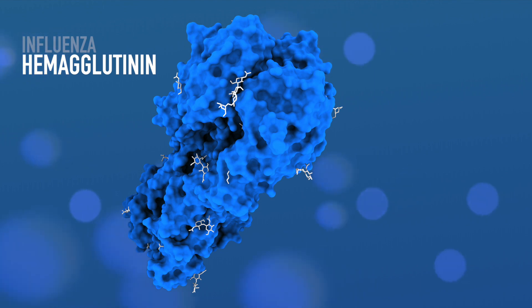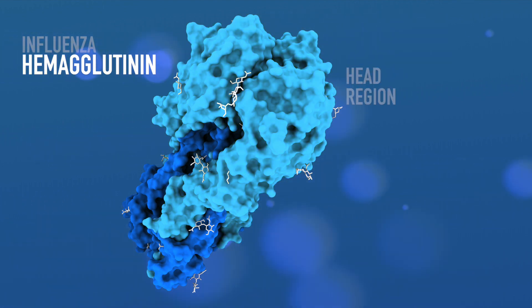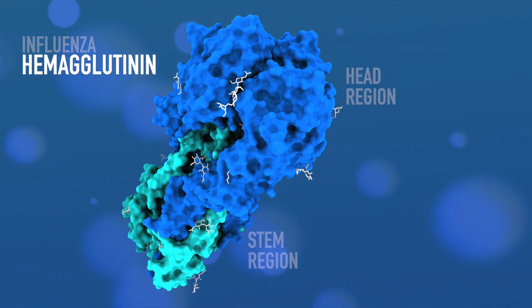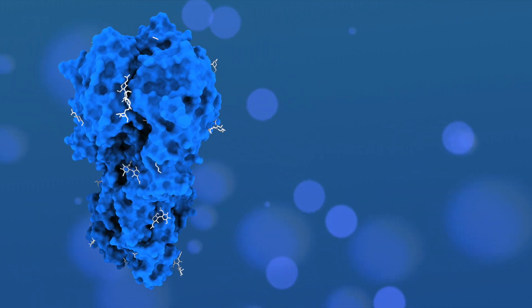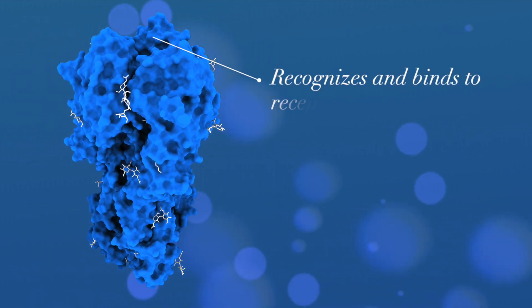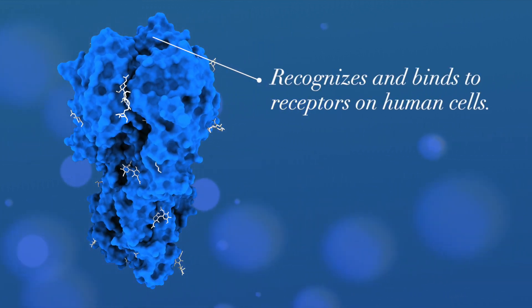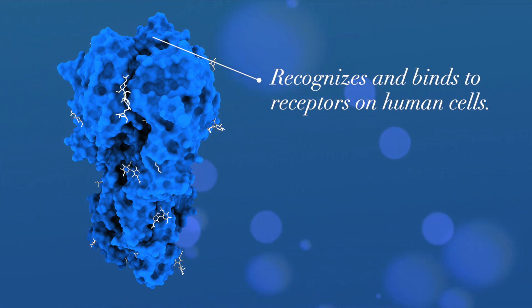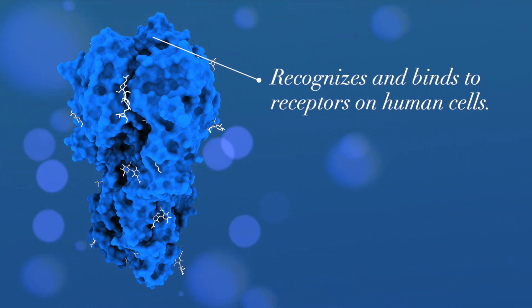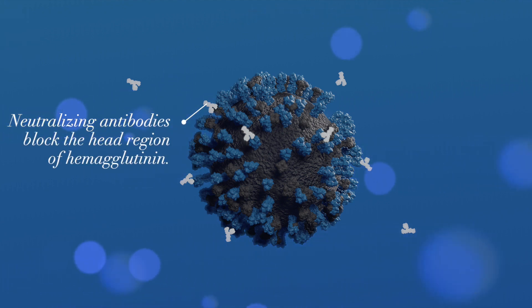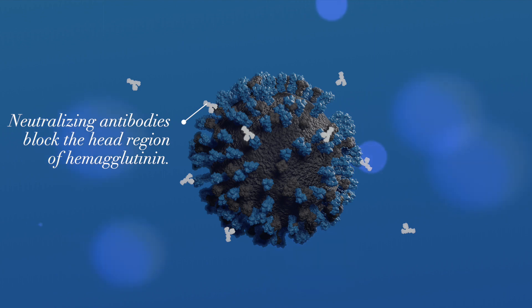Hemagglutinin is a big protein with a head region and a stem region. The head region is where binding happens, so you could think about designing a protein that binds to the head region and stops it from recognizing and infecting human cells. In fact, this is how your immune system normally defends against the influenza virus, by raising antibody proteins that can bind to this head region and neutralize the virus.